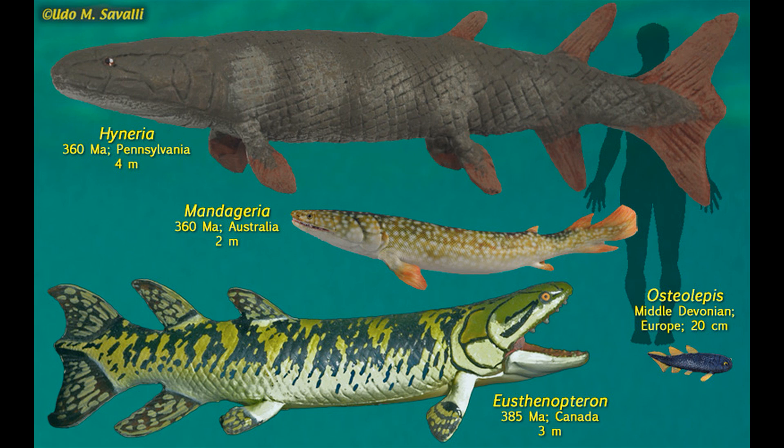Sarcopterygii is the clade of lobe-finned fish — the coelacanths, lungfish, amphibians, reptiles, birds, and mammals — which we covered in the past 34 episodes of this series.